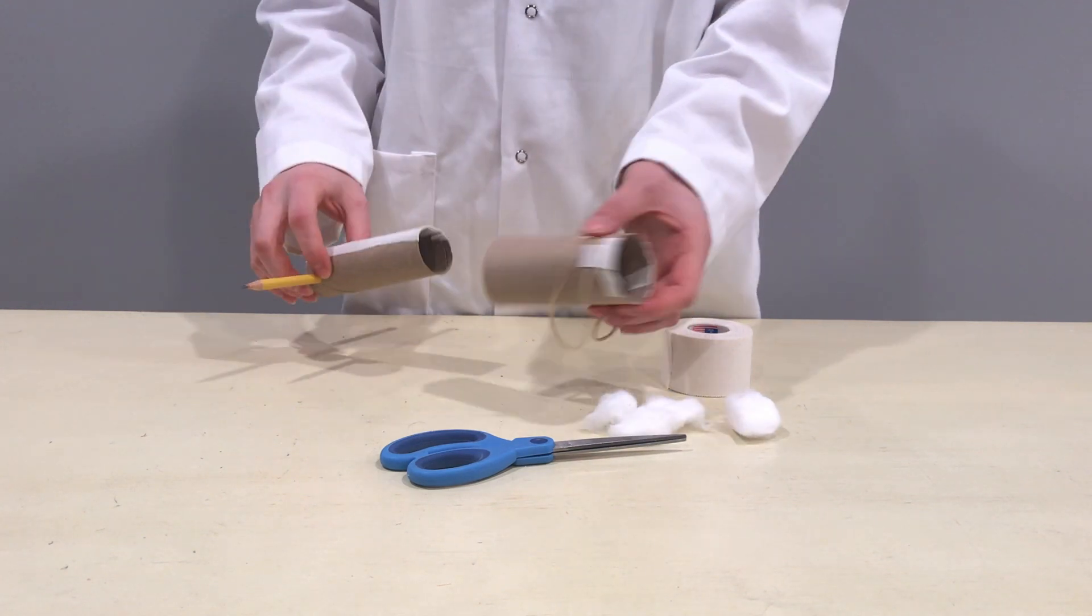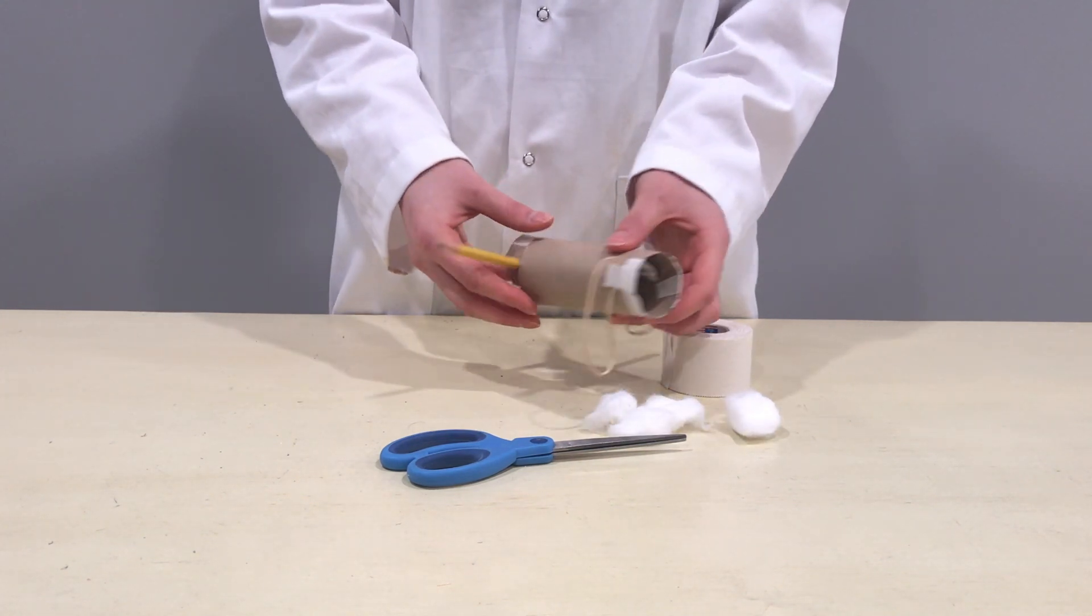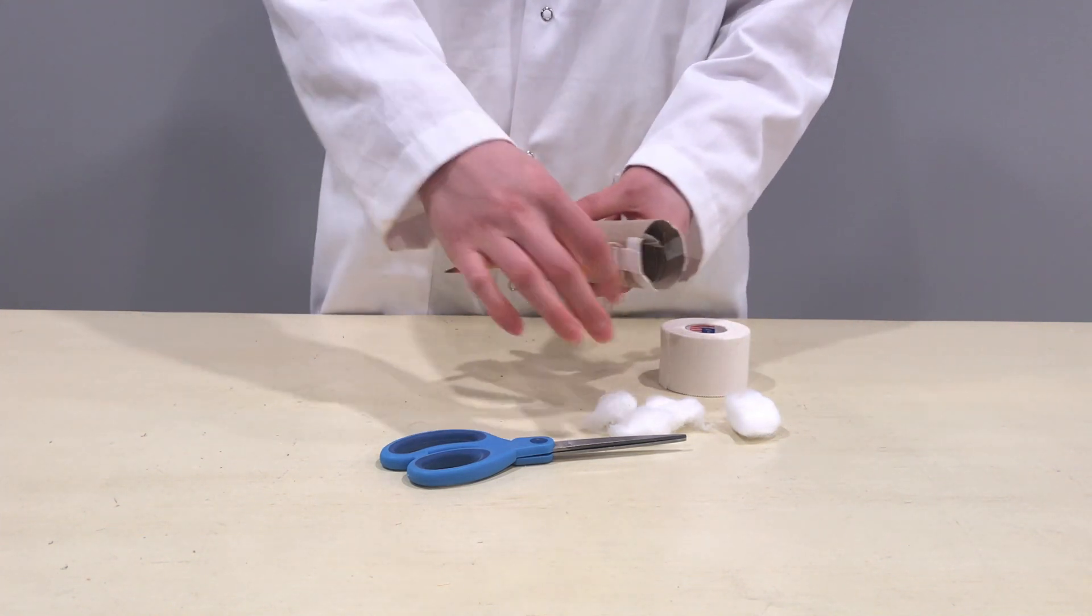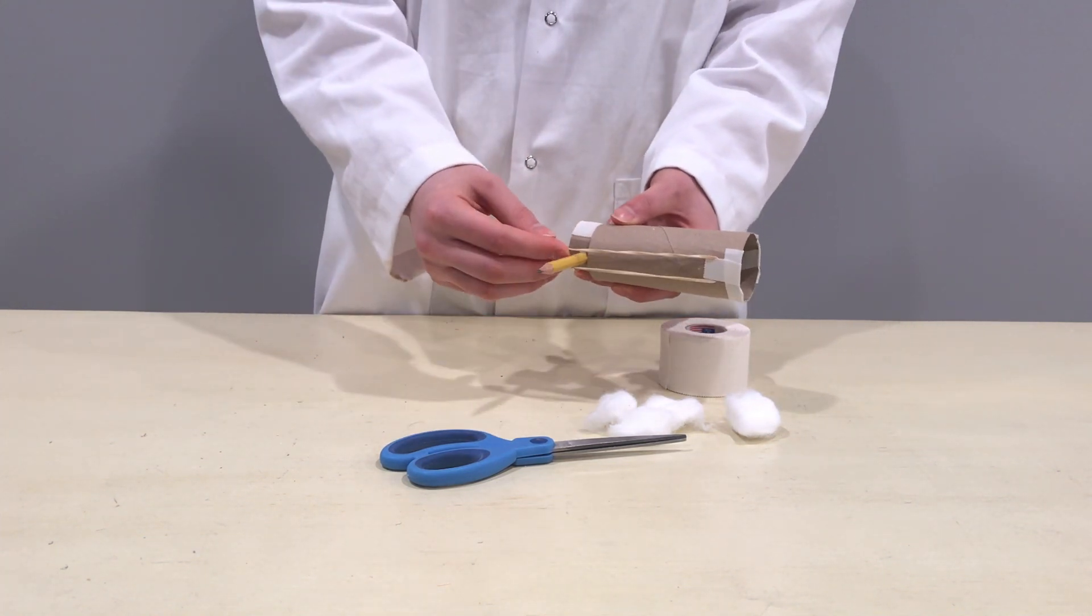Holding the rubber band tube so that the rubber bands are at the top, slide the narrower tube into the wider one, with the pencil end at the bottom. Carefully loop each rubber band around the pencil.